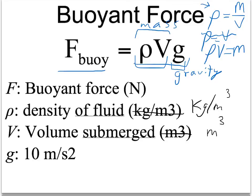Let's make sure we understand exactly how to use this equation. F here is the buoyant force measured in newtons. Rho is the density of the fluid. V is the volume submerged. And then we know gravity on Earth is 10 meters per second squared, or 10 newtons per kilogram.